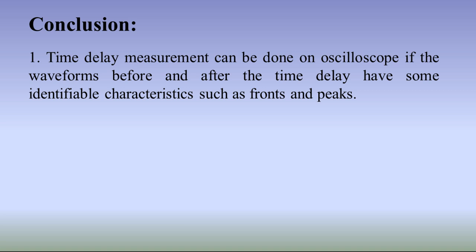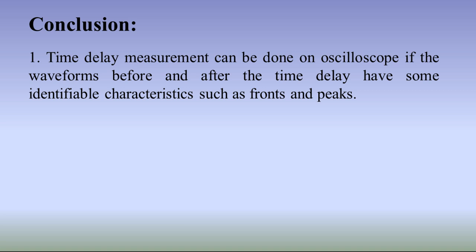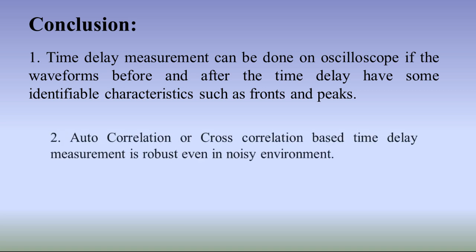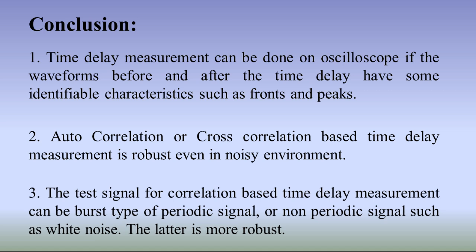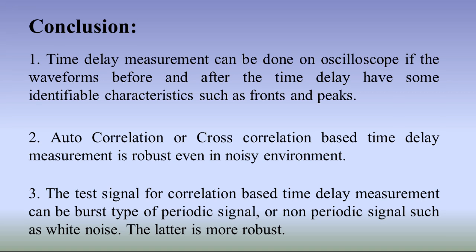In conclusion, time delay measurement can be done on an oscilloscope if the waveforms have identifiable characteristics such as fronts and peaks. Auto-correlation or cross-correlation based time delay measurement is robust even in noisy environments. The test signal can be a burst-type periodic signal or a non-periodic signal such as white noise — the latter is more robust. We will follow up with application examples such as sound speed measurement using cross-correlation.